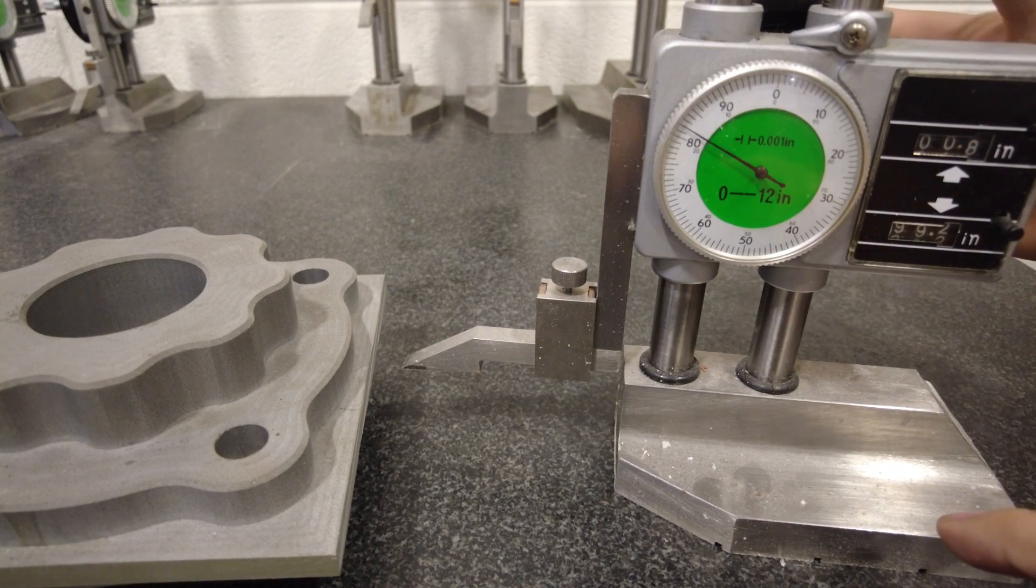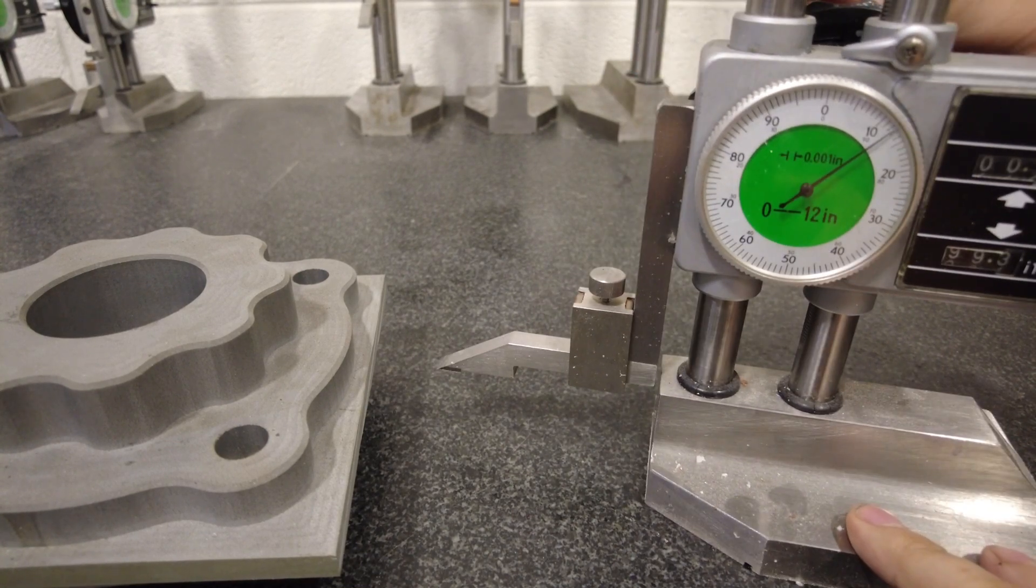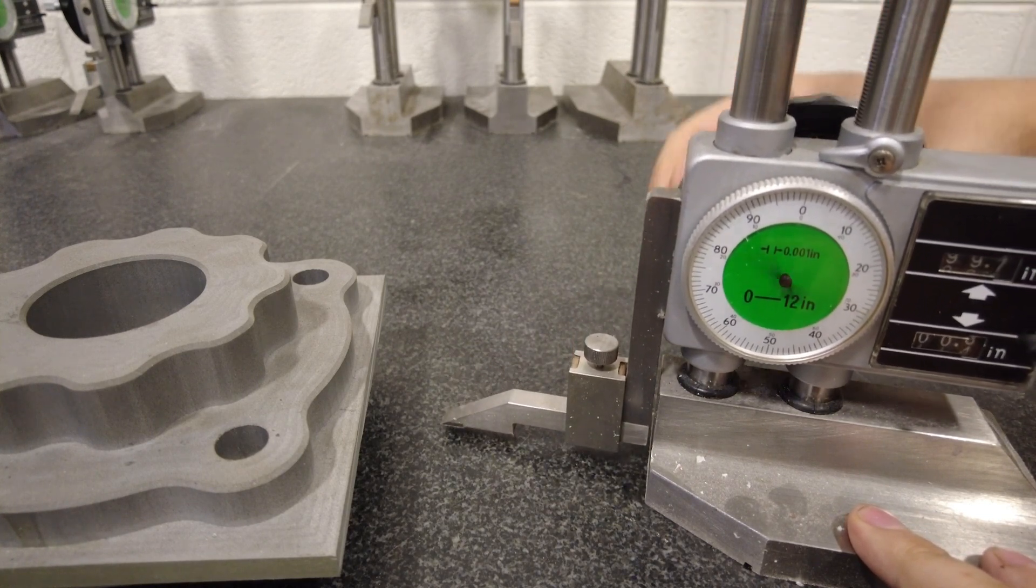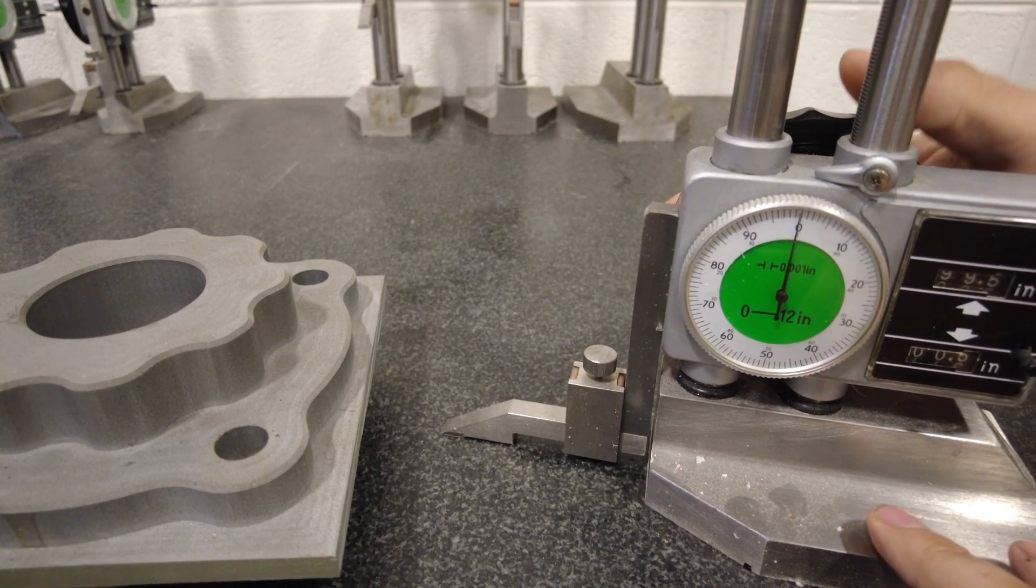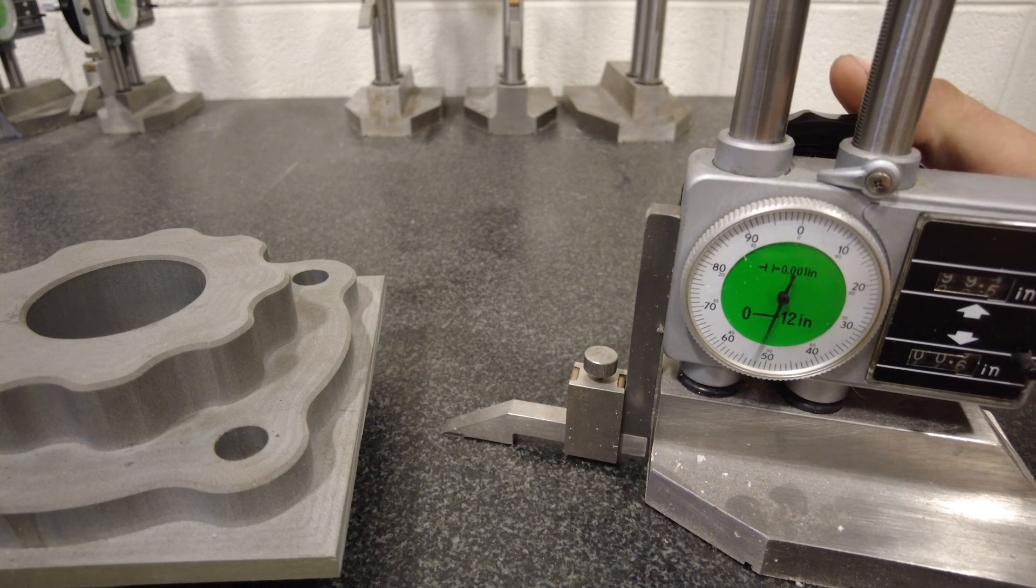First thing you want to do is zero your height gauge. You're going to jog it down to the granite surface plate. When you jog it down, you want to make sure you don't go too far.